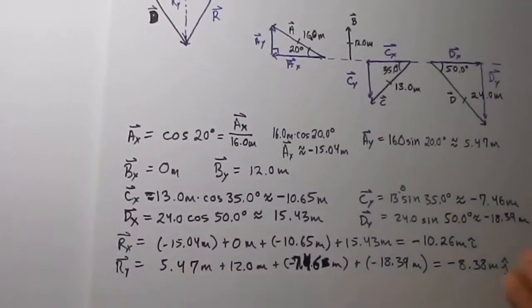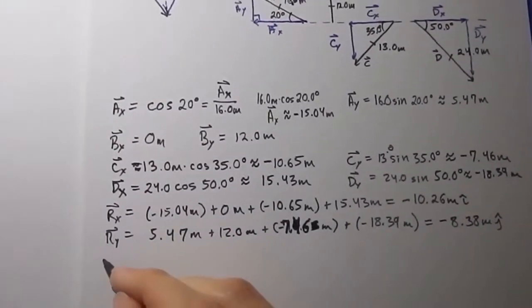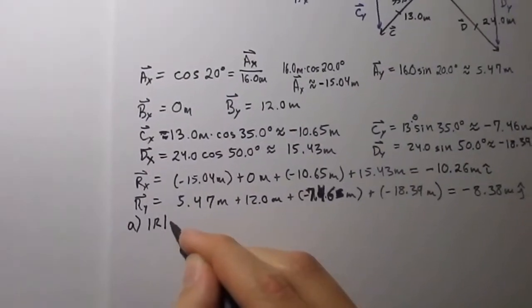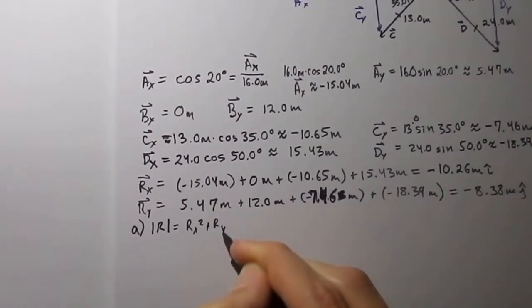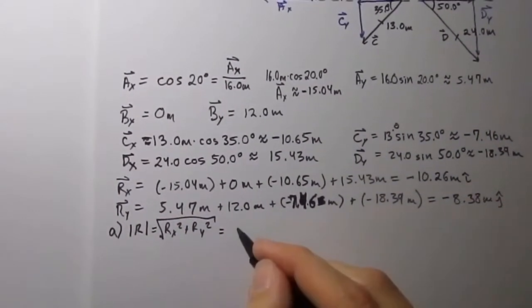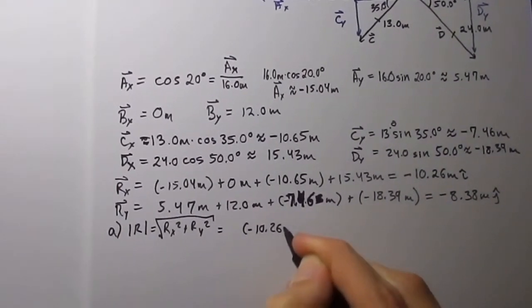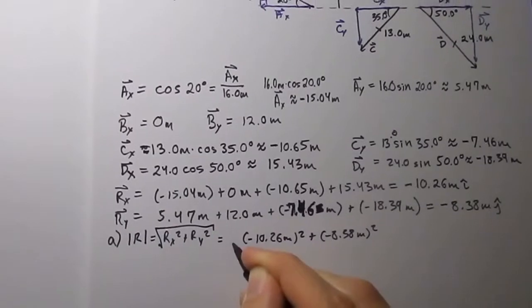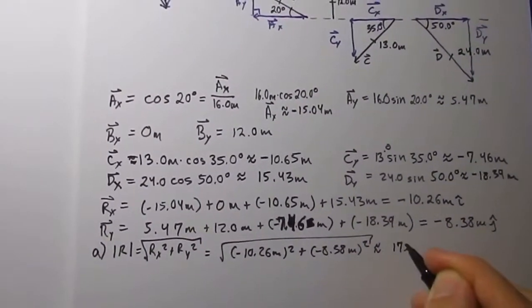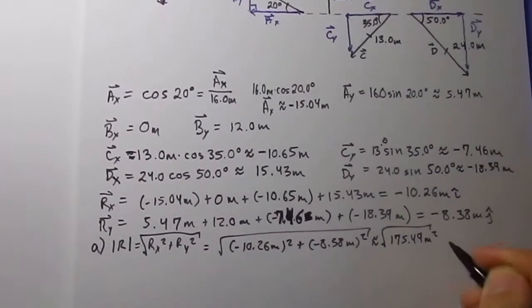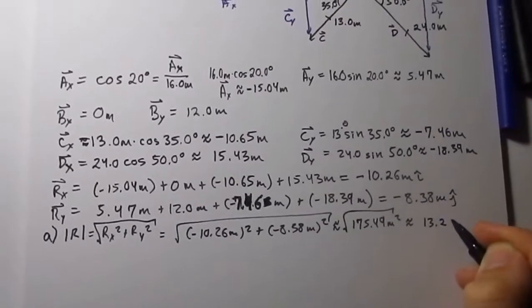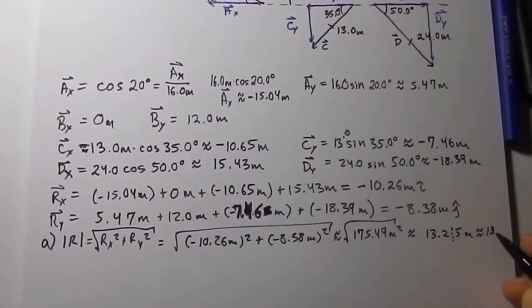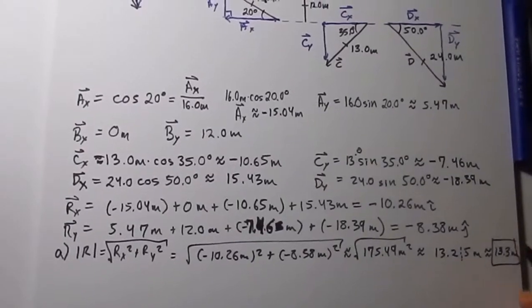So now, let's find the magnitude. Because even though we got, worked hard to get these, this isn't the answer. The answer to A is the magnitude, which we know from up there. The equation's going to be r_x squared plus r_y squared, square root, equals, so r_x is negative 10.26 meters squared, r_y is negative 8.38 meters squared, which is approximately 175.49 meters squared, which is approximately 13.25 for significant figures, which is approximately 13.3 meters. And that is the magnitude.